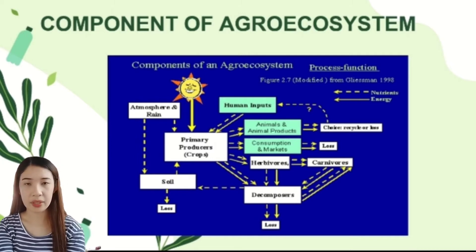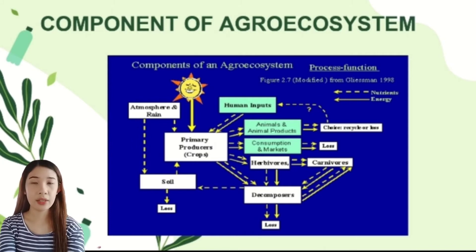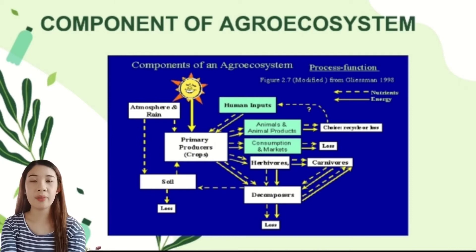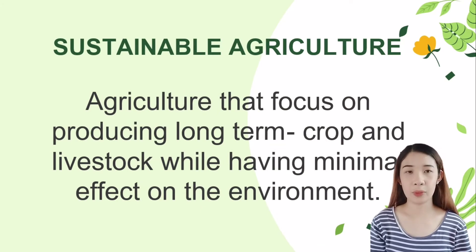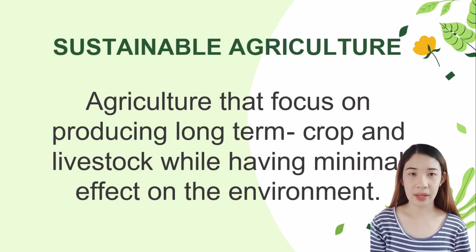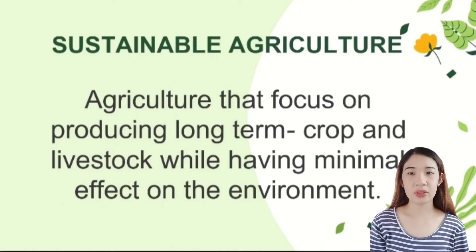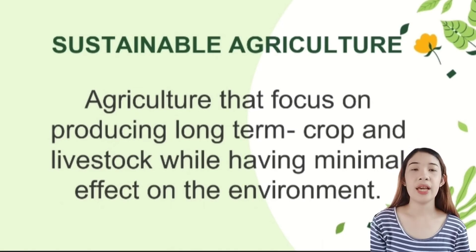From the animals and animal products, there may be recycling or losses through consumption, market losses, and flow to carnivores. From the animals and plants, materials penetrate through the soil and some are lost. Sustainable agriculture is a type of agriculture that produces long-term crops and livestock while having minimal effect on the environment. It tries to find a good balance between the need for food production and the preservation of the ecological system within the environment.